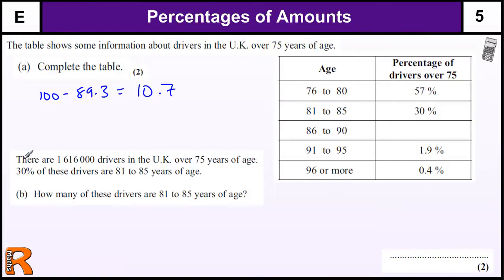Moving on to the next part, which is worth two marks: there are one million six hundred and sixteen thousand drivers in the UK over 75. 30% of these drivers are 81 to 85 years of age. How many drivers are that age? So we need to find 30% of that number.